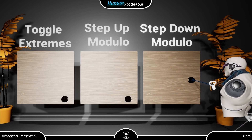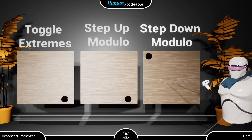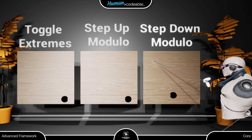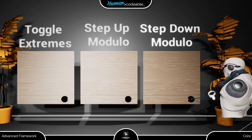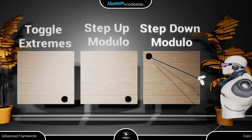The step-down modulo setting is practically the opposite of the step-up modulo. It moves the draggable mesh to the next lower section and goes to the highest section when the mesh is already at the lowest section upon select.